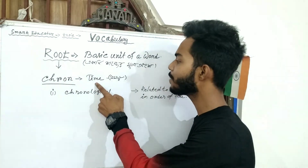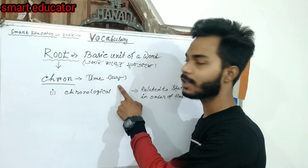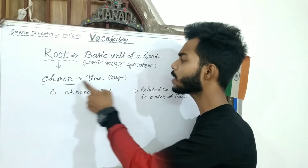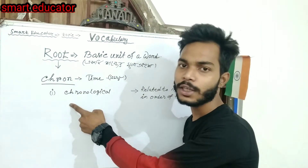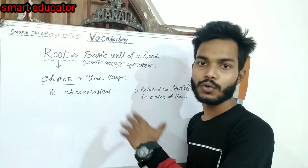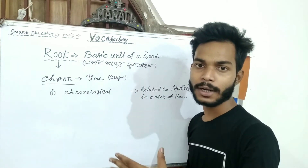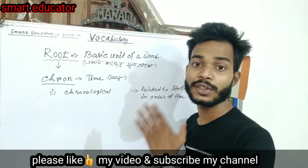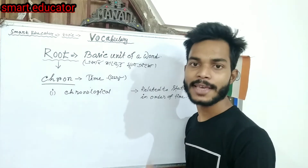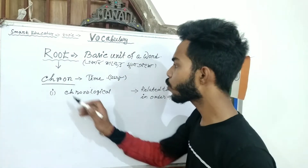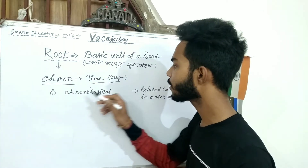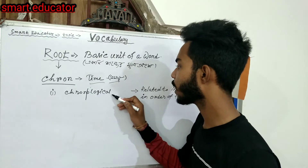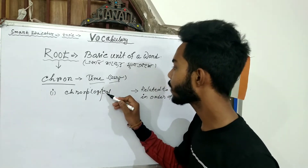So what does 'chronological' mean? Let's read the root word. Chronological will be divided into parts: 'chron,' which means time; 'o,' and 'logi.' Which part means time? 'Chron' means time.